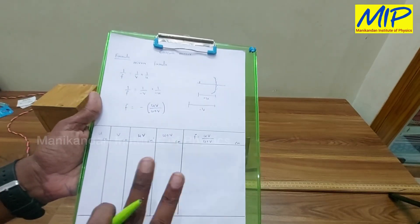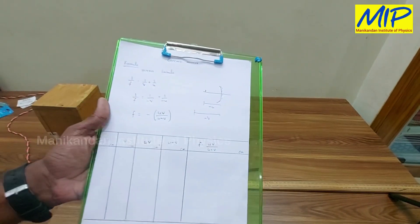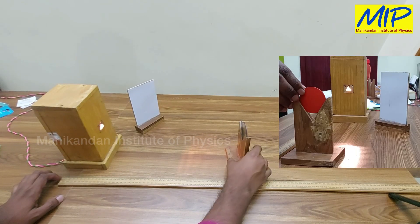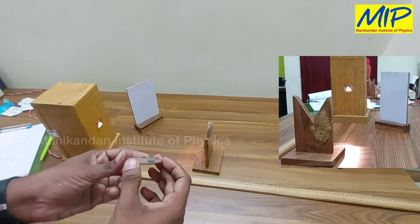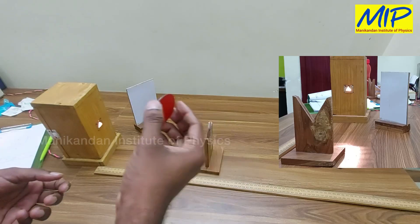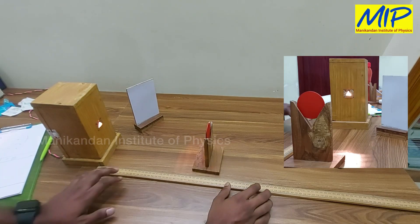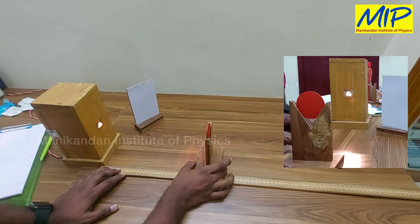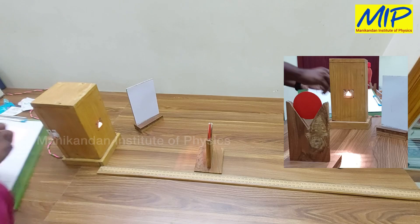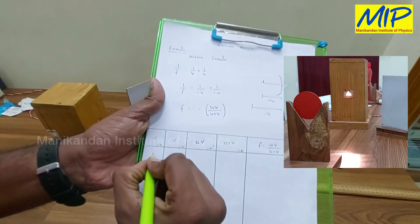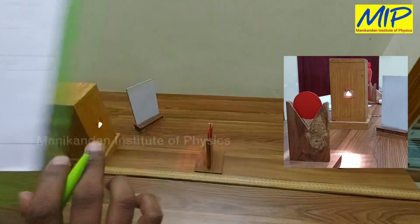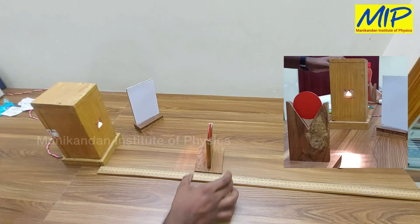Now I'm going to start the experiment. To get a real and inverted image, I'm going to place the mirror between f and 2f. I place the mirror at 30 centimeters, so my u value — the object distance — is 30 centimeters.